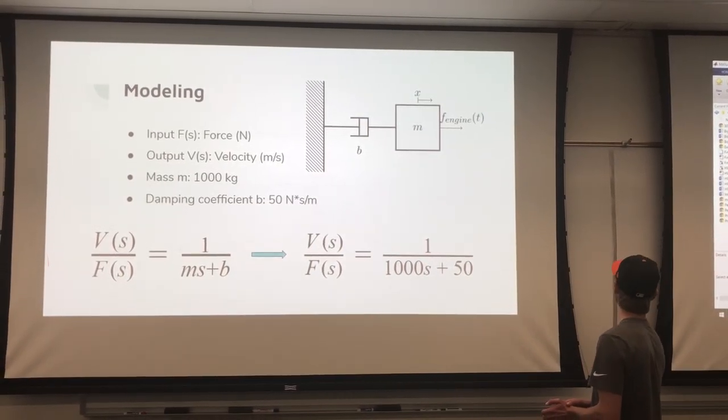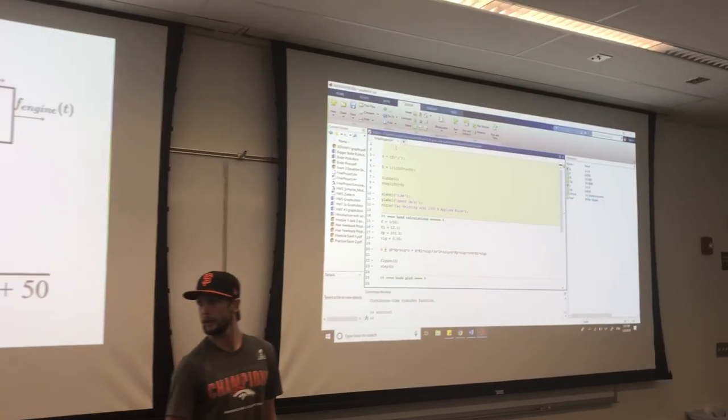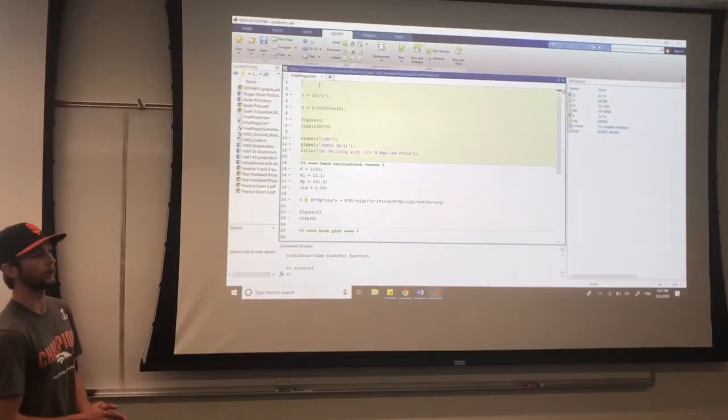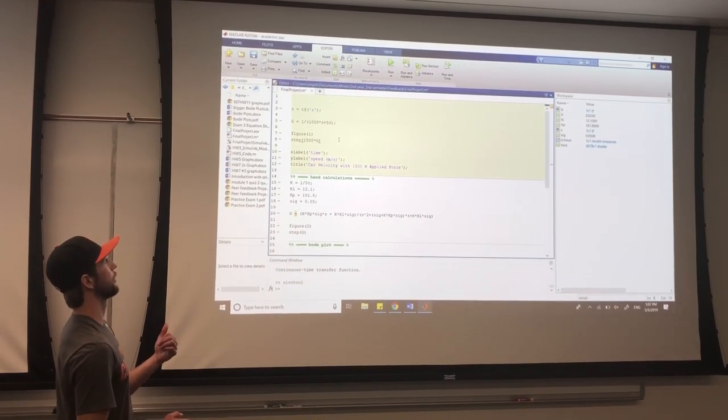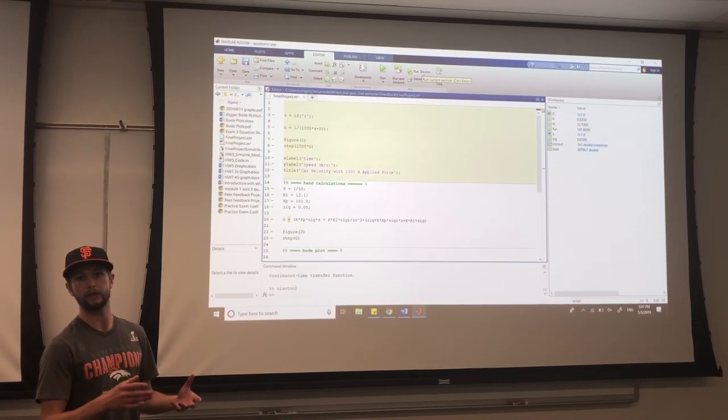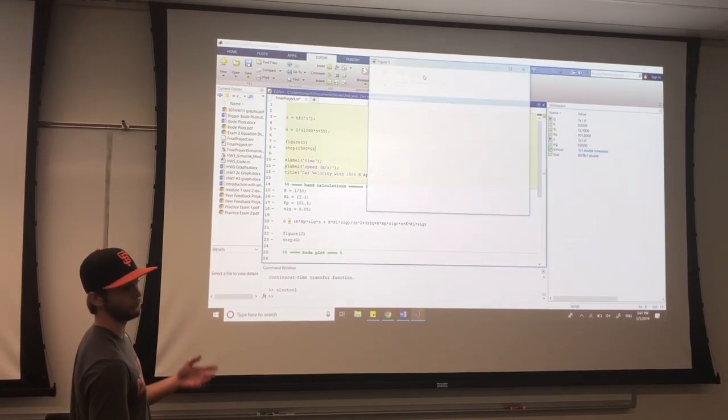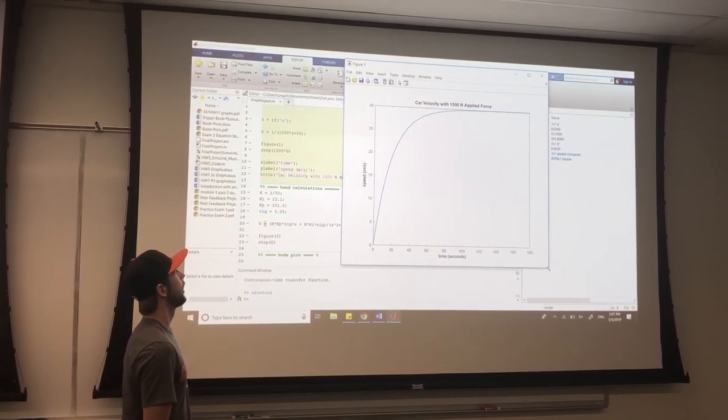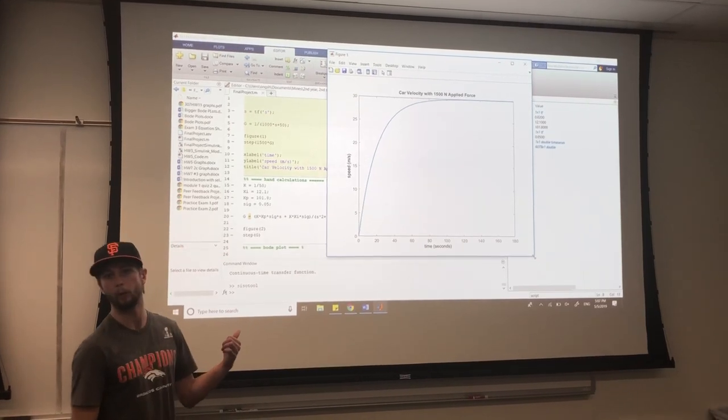In the MATLAB code, we plotted this transfer function. We used a unit step of 1,500 times g for the force of the engine and the impact on the transfer function. We used 1,500 newtons. This is the plot we got. It levels out at 30 meters per second.